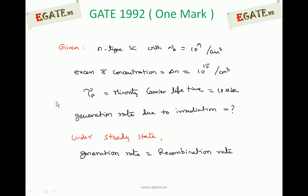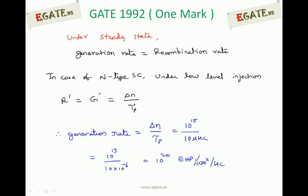We need to calculate the generation rate due to irradiation under steady state. Under steady state, generation rate is equal to recombination rate. We know that the recombination rate equation in the case of an n-type semiconductor under low-level injection is delta N divided by tau p. Recombination rate is defined as excess minority carriers divided by their lifetime.